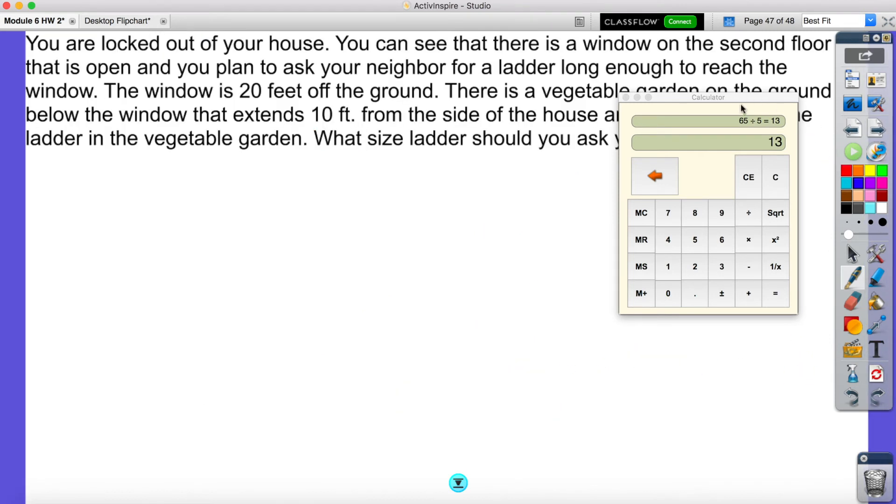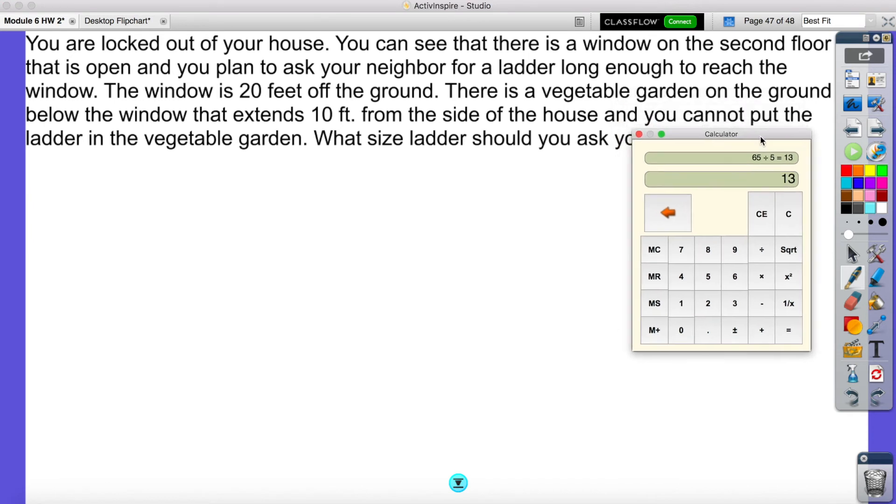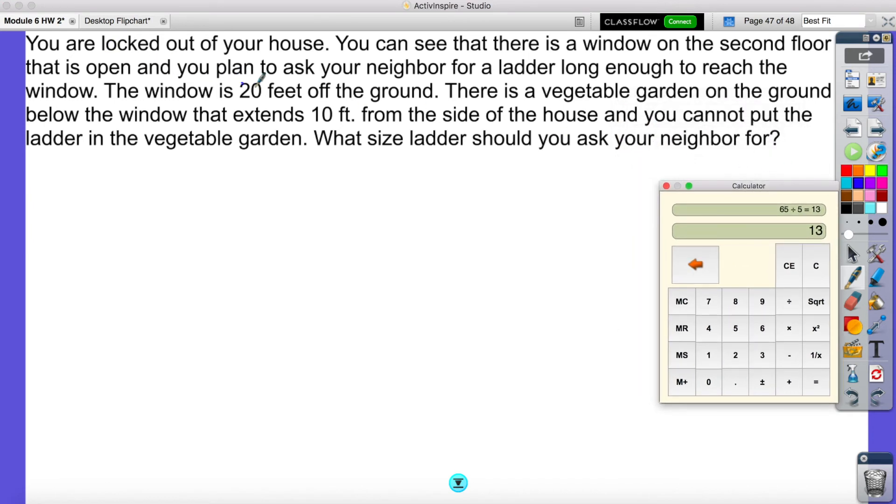All right, so let's go ahead and look at this one. It says, you are locked out of your house. You can see that there's a window on the second floor that is open, and you plan to ask your neighbor for a ladder long enough to reach the window. The window is 20 feet off the ground, and there's a vegetable garden below the window that extends 10 feet from the ground of the house, and you cannot put the ladder in the vegetable garden. What size should the ladder be?